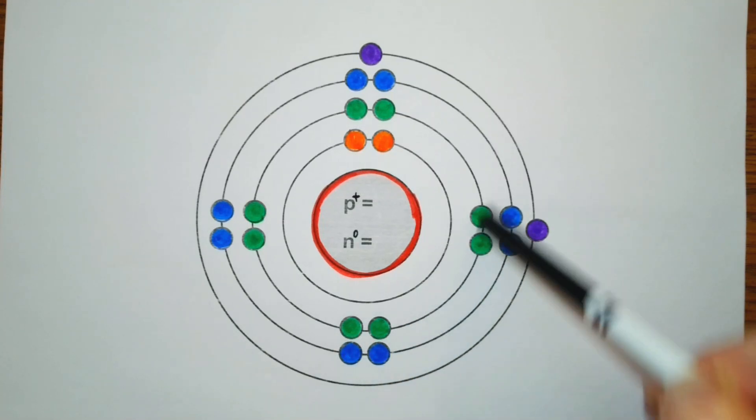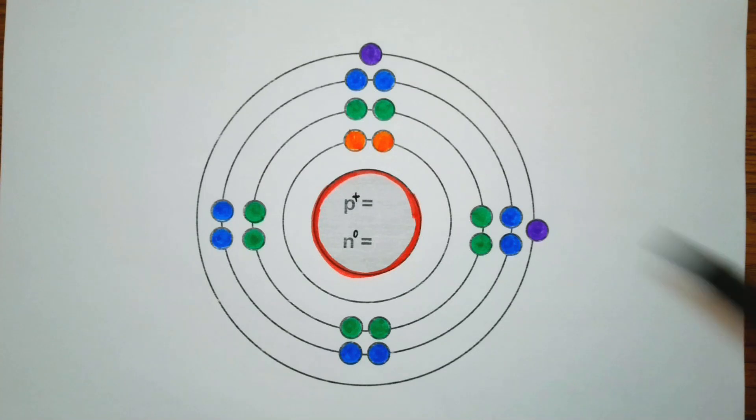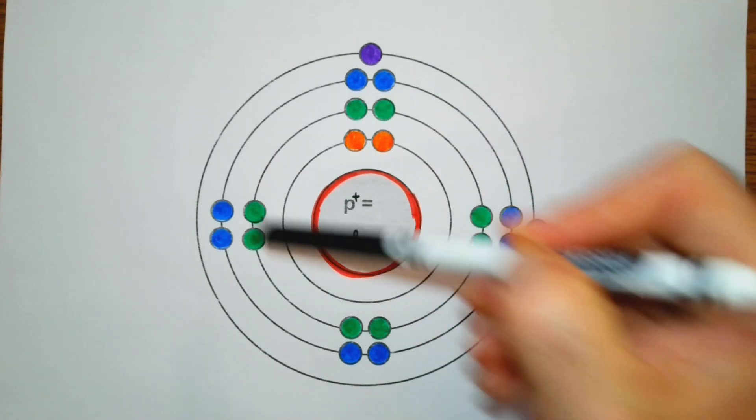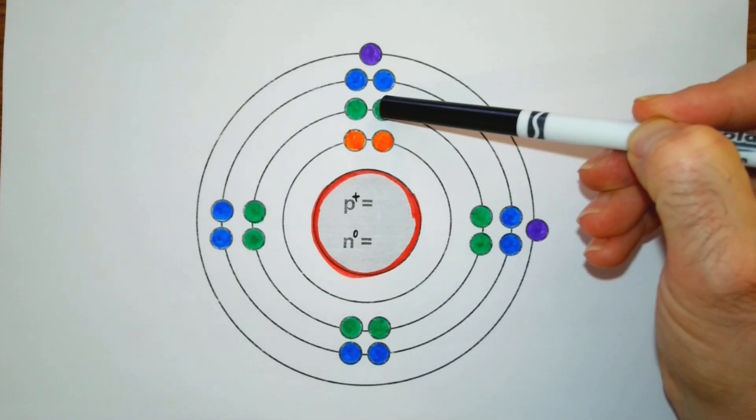In the second orbital it can hold a maximum of eight electrons, and the electrons don't pair until one, two, three, four, the fifth electron in that orbital.